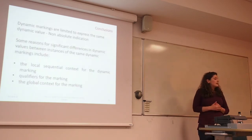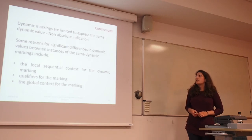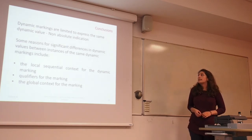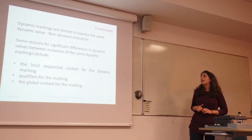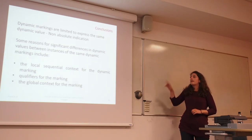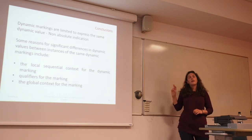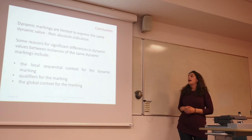In conclusion, since dynamic markings are limited to expressing the same dynamic value with no absolute indication, significant differences in dynamic values between instances of the same dynamic marking include the local sequential context of the dynamic marking, qualifiers of the marking, and the global context of the marking. These are the three main focuses for modeling our system.